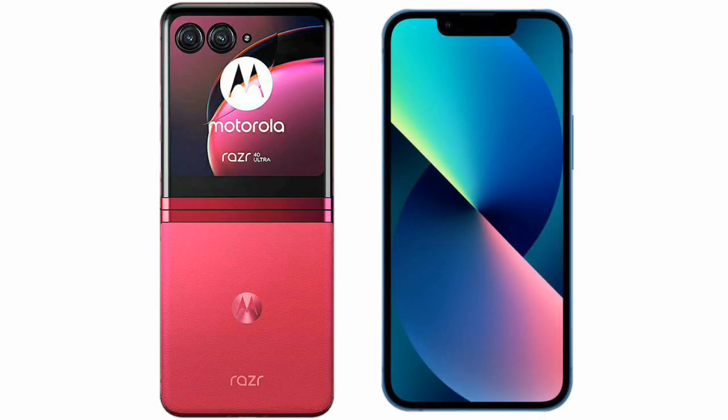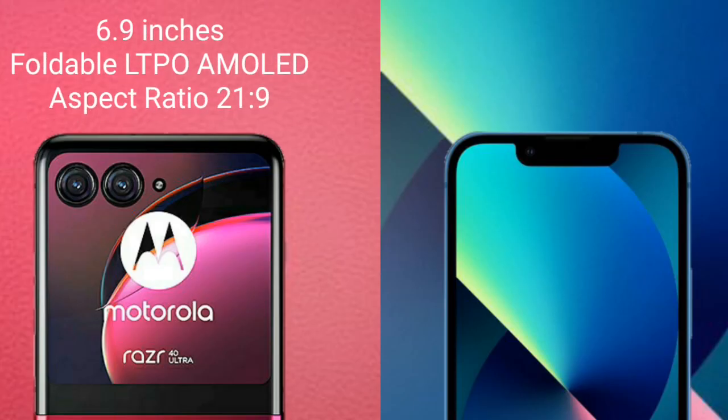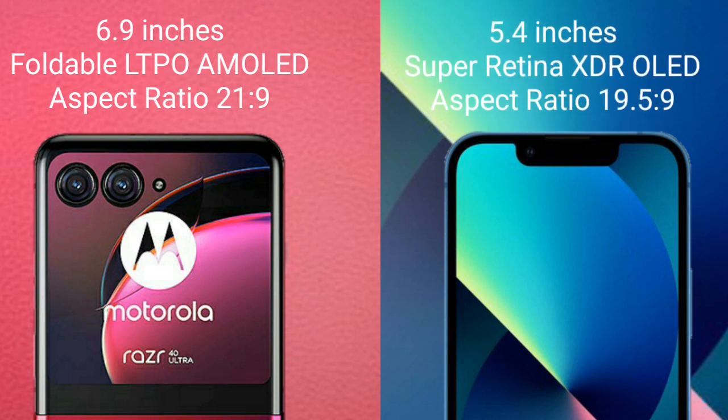I will compare the new Motorola RAZR 40 Ultra with the iPhone 13 mini. The Motorola RAZR 40 Ultra comes with a 6.9-inch foldable LTPO AMOLED display with an aspect ratio of 21.9. The iPhone 13 mini comes with a 4.5-inch Super Retina XDR OLED display with an aspect ratio of 19.5:9.